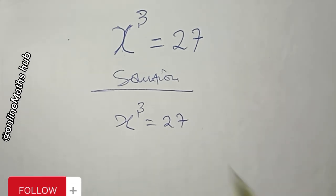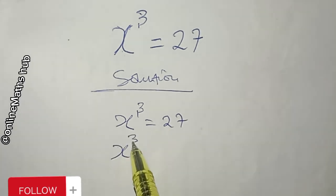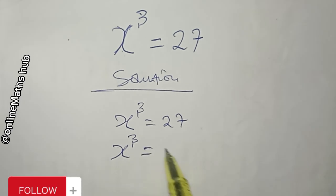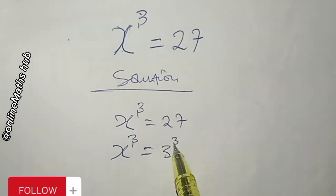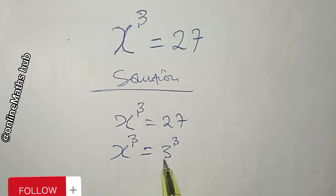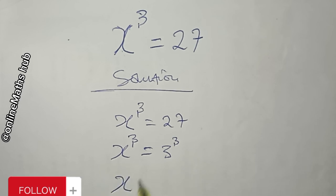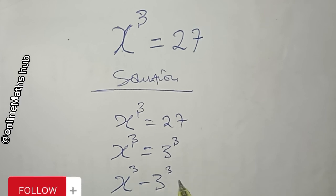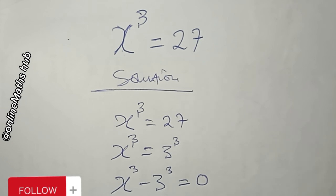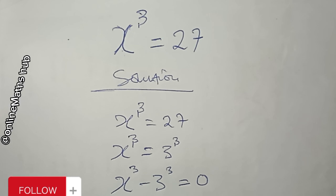The first thing I want to do is rewrite 27 as 3³. If I bring this to the left-hand side, I'm going to have x³ minus 3³ equals zero. You can see that this is the difference of two cubes.